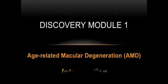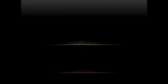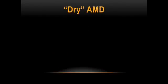Hi, everyone. Let's start by considering the two main types of age-related macular degeneration. The first is commonly referred to as dry. You may hear the technical term for this, non-exudative.